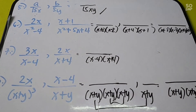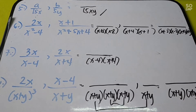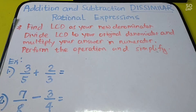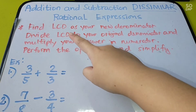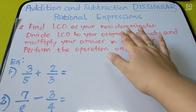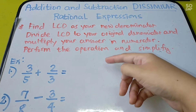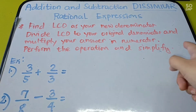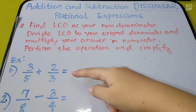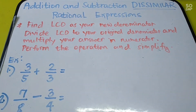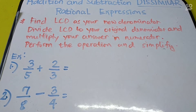Now let us apply this to addition and subtraction of dissimilar rational expressions. The steps are: first, find the LCD — that becomes your new denominator. Then divide the LCD by your original denominator and multiply the result by the numerator. Finally, perform the operation and simplify. This process is longer than for similar expressions, so listen carefully.